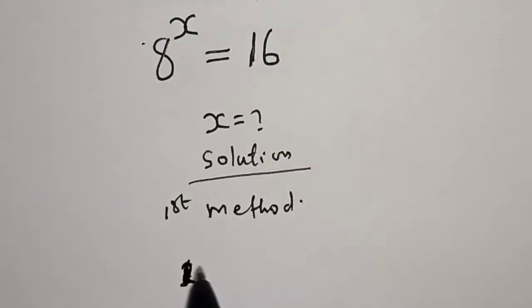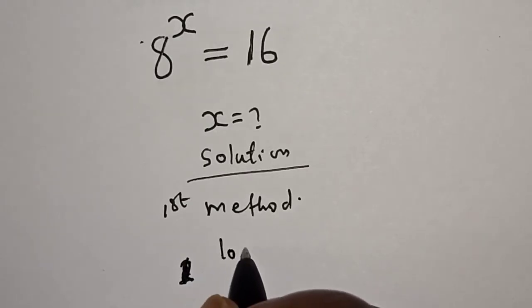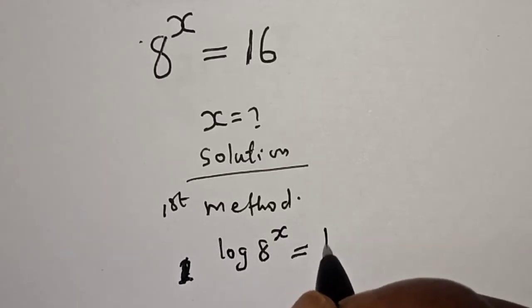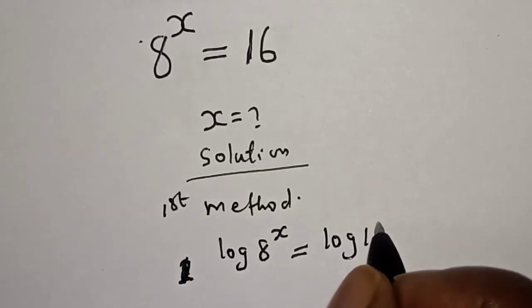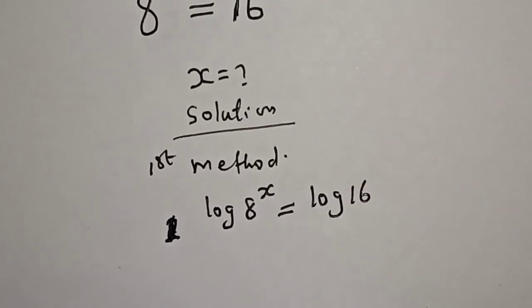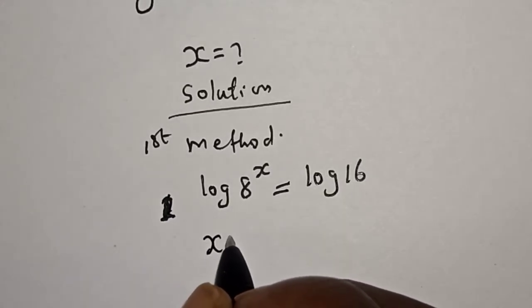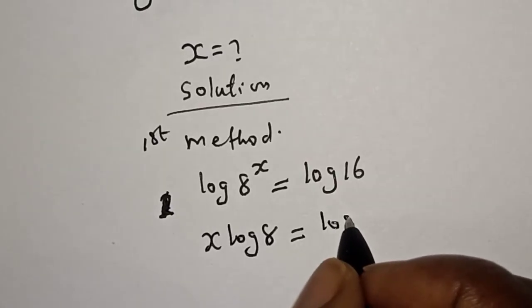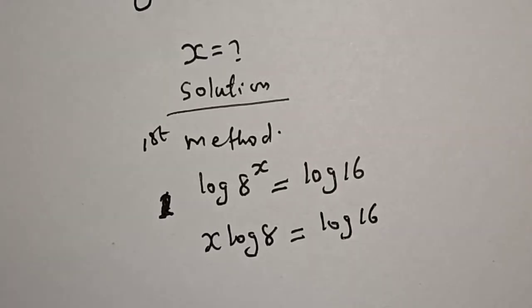Let's take the log of both sides. Log 8 raised to power x is equal to log 16. Then, this is x log 8 is equal to log 16.